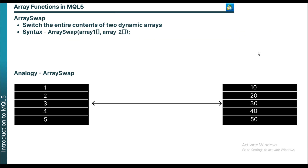ArraySwap is one of the easiest functions to understand in MQL5 because it's very straightforward. What it does is swap the elements of two arrays — if you want to replace the elements in one array with the elements in another array, ArraySwap will do that for you.